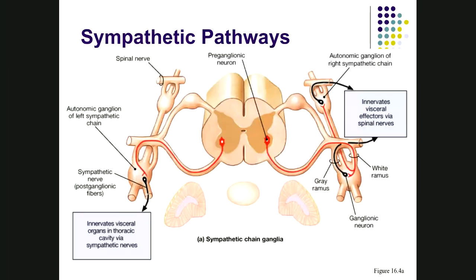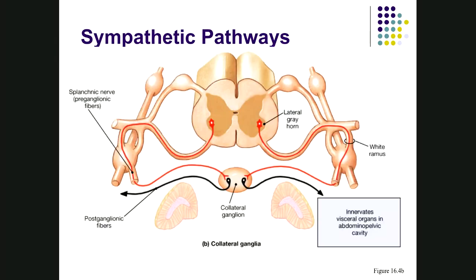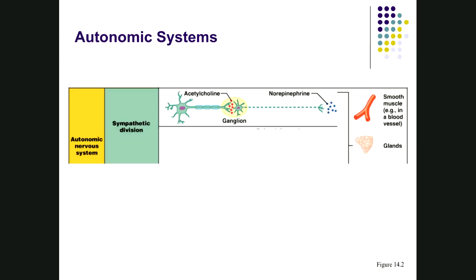Pre-ganglionic fibers are shown in red; post-ganglionic fibers in black. Sometimes synapse doesn't happen immediately — neurons can travel up or down the chain, or leave the chain entirely to synapse at collateral ganglia not part of the chain. In this two-neuron system, pre-ganglionic fibers release acetylcholine, and post-ganglionic fibers release norepinephrine, which produces all the effects on internal organs.